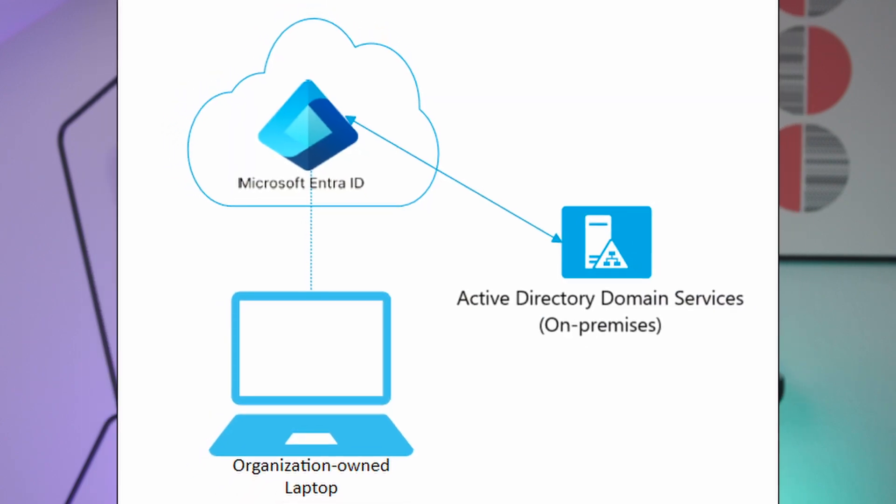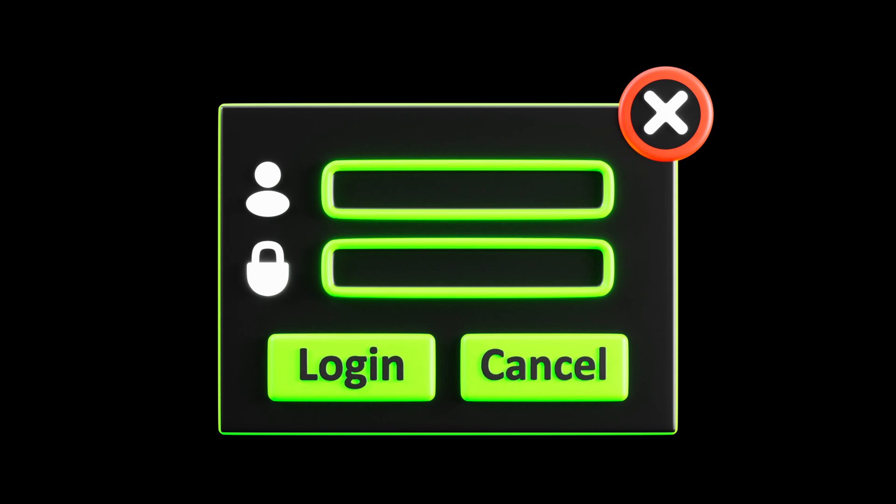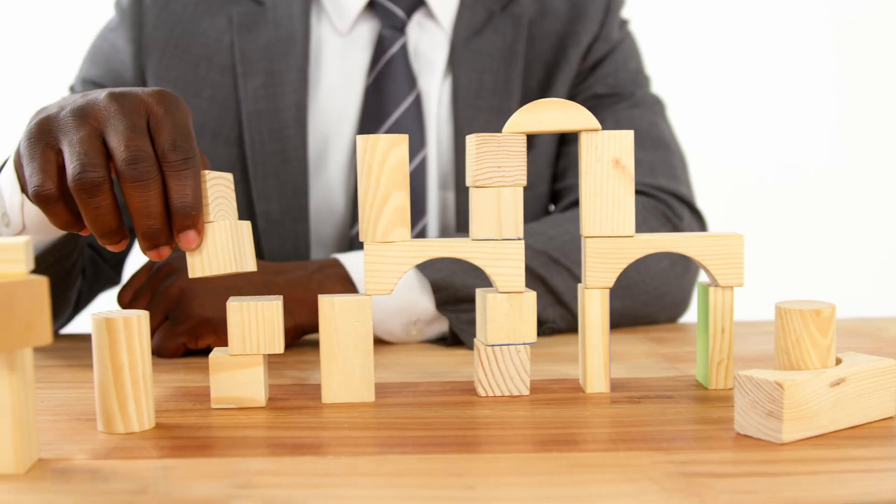However, we'll mainly focus on setting up Windows LAPS for Entra-joined computers in this video, but I think you can definitely figure it out for your hybrid joined computers once the video is over. LAPS has been available on Microsoft for many years. It is used to manage the password of a specified local administrator account by regularly rotating the password and backing it up to AD.